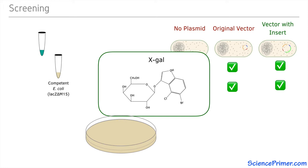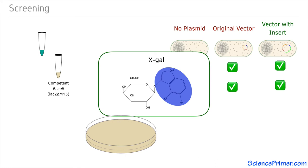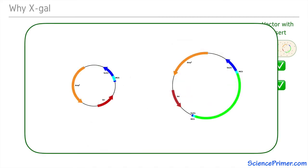Once cleaved, the indole ring structures combine to form a dark blue insoluble pigment. To understand why X-gal is used, consider the two possible vectors that are giving the surviving cells resistance to ampicillin.